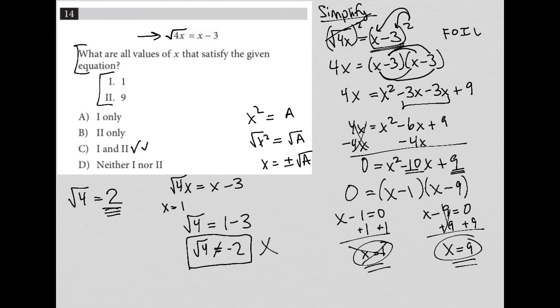It must be 9, but let's check to make sure. Square root of 4 times 9 is 36, equals 9 minus 3. The square root of 36, we're going to say is only positive 6, not plus or minus 6. Square root of 36 is just the positive version. And 9 minus 3 is 6, so that does work out. So really, our answer is choice B, not choice C.